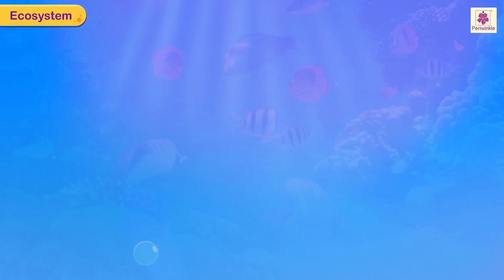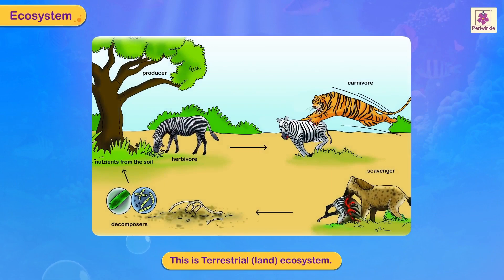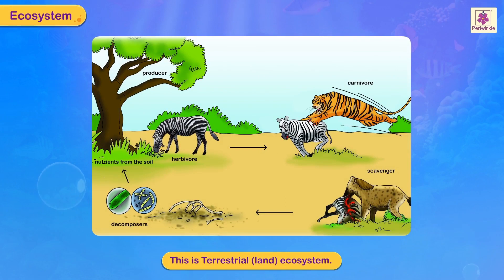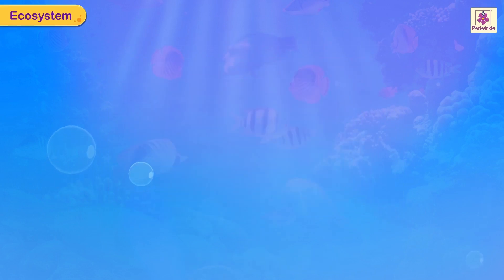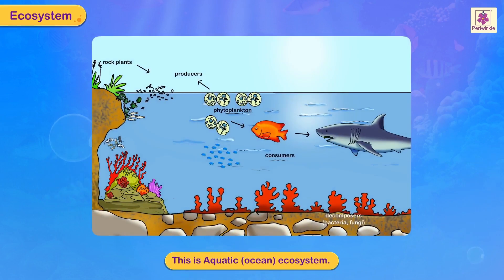This is a terrestrial, that is land ecosystem. This is aquatic, that is ocean ecosystem.